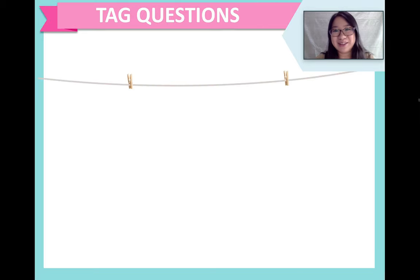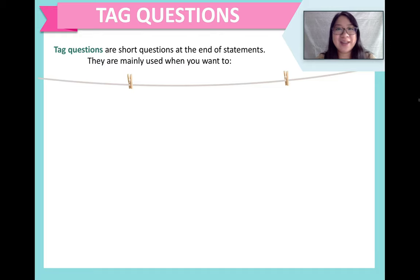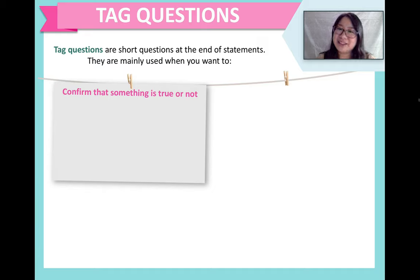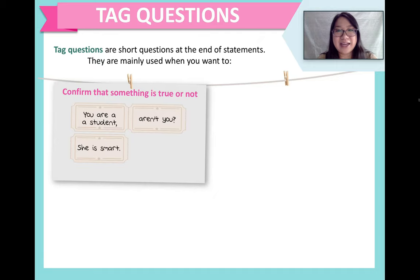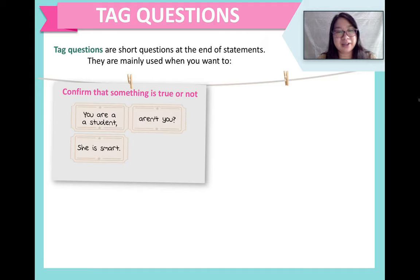Now let's talk about this week's grammar point: tag questions. What are tag questions? Tag questions are questions used at the end of a statement. There are two main uses. The first is to confirm whether something is true or not. Here we have two statements: 'You are a student' and 'She is smart.' Now we want to check if this information is true by adding a tag question. Notice: when we add the tag question, we put a comma in between.